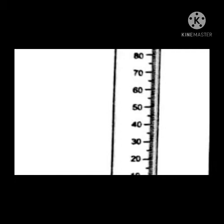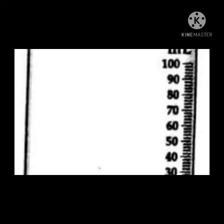The measuring cylinder is 10 cm in length with markings graduated in cubic centimeters or milliliters. To measure the volume, we pour the liquid into the cylinder, keep the eye in line with the marking, and then read the volume of the liquid.